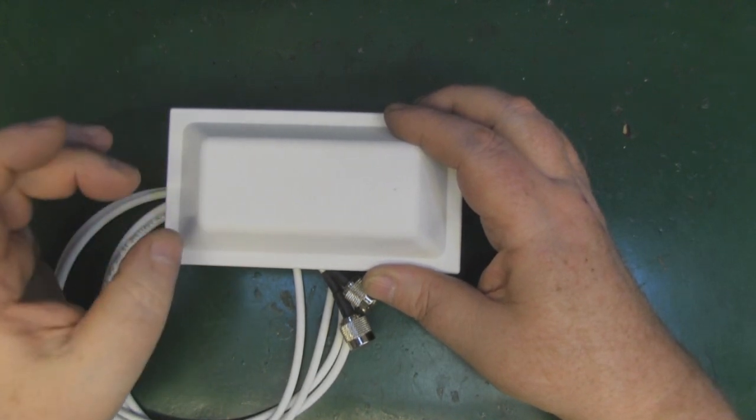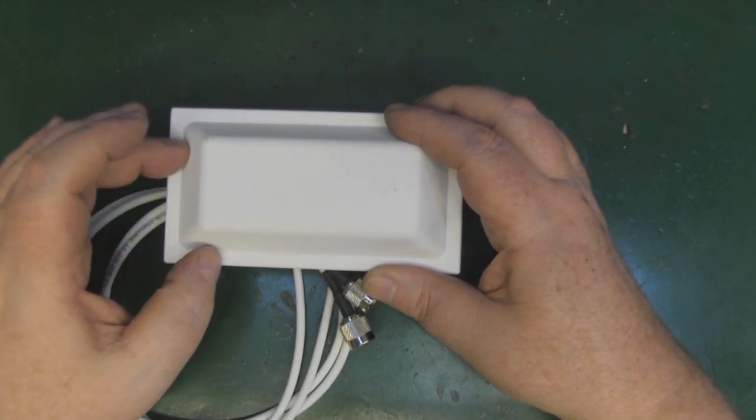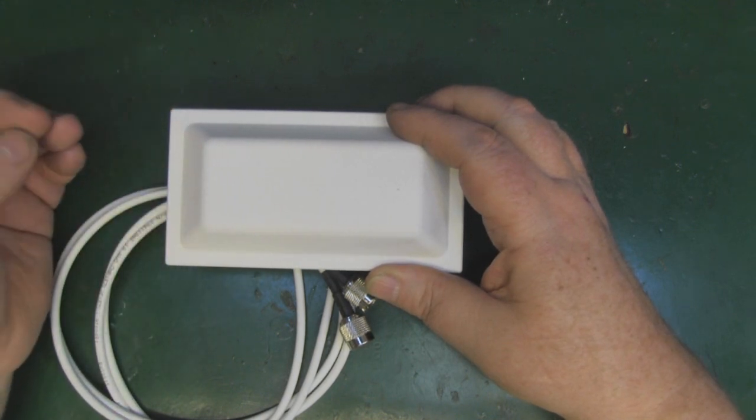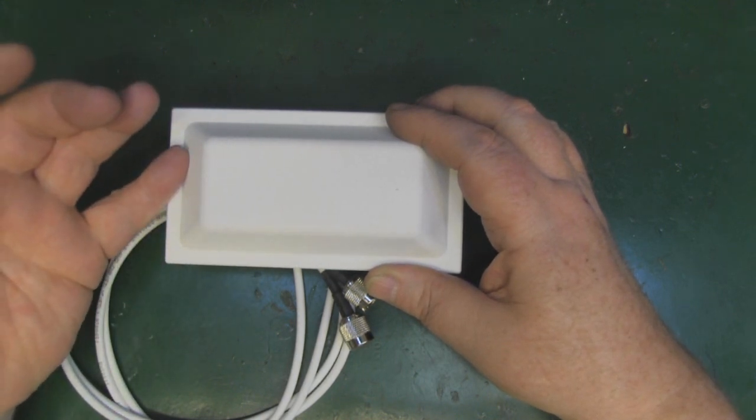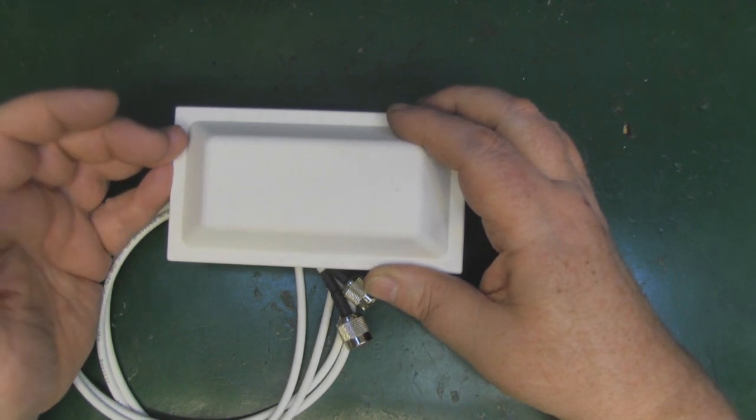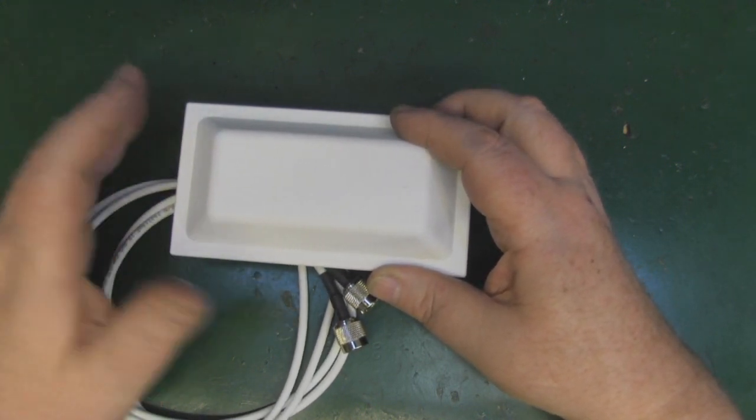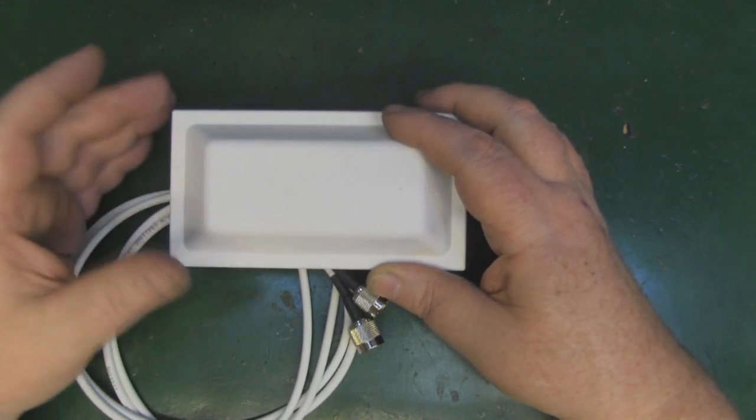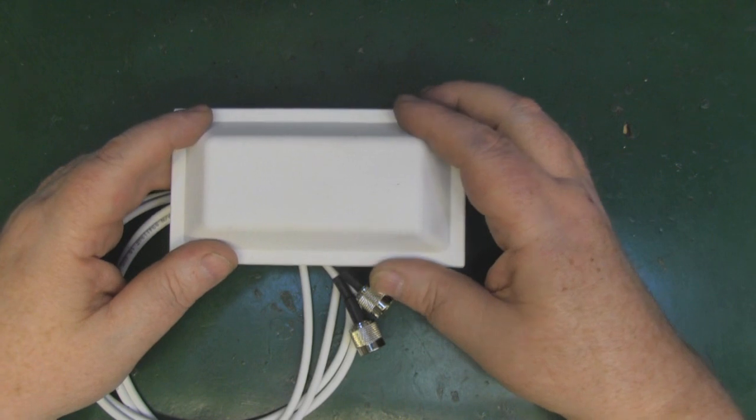One other little thing to mention before we take it apart is I did measure the VSWR of this off-camera and I measured it at 1.6. Now Cisco say on their spec sheet that it's 1.7, so my equipment is a little bit old and hasn't been calibrated for some time. It's close enough compared to the equipment that Cisco use anyway.